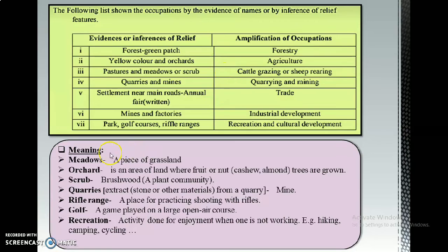Here are some important definitions: Meadows means a piece of grassland. Orchards are an area of land where fruit or nut trees like cashew or almond are grown. Scrub means brushwood — a plant community. Quarries means to extract stone or other materials from a quarry. Rifle range is a place for practicing shooting with rifles. Golf is a game played on a large open-air course. Recreation means an activity done for enjoyment when one is not working — like hiking, camping, cycling, etc.